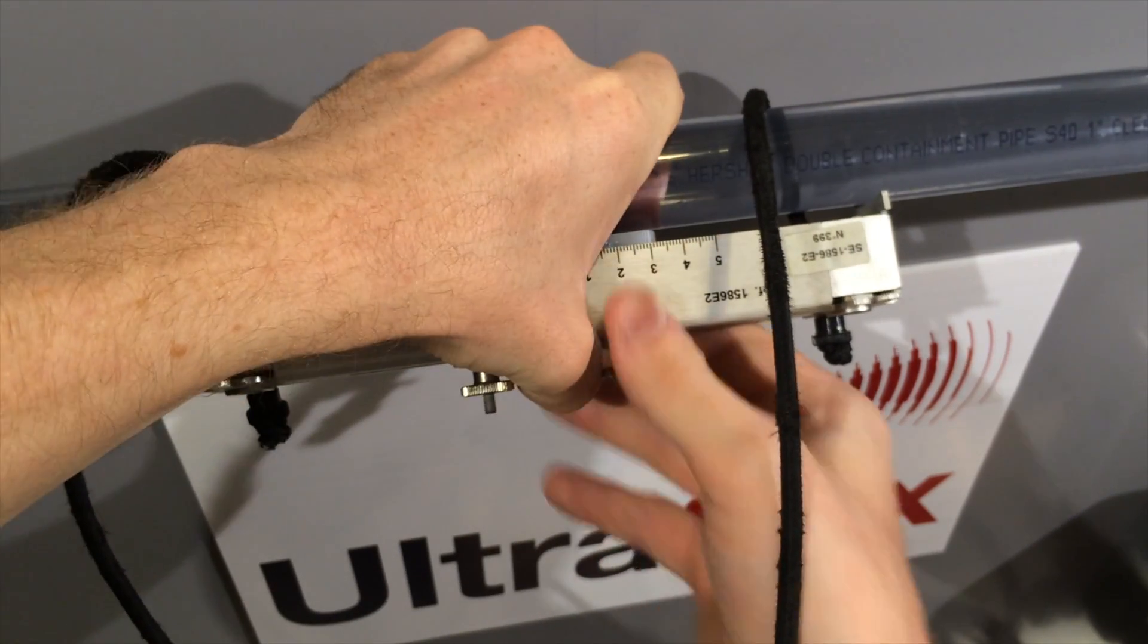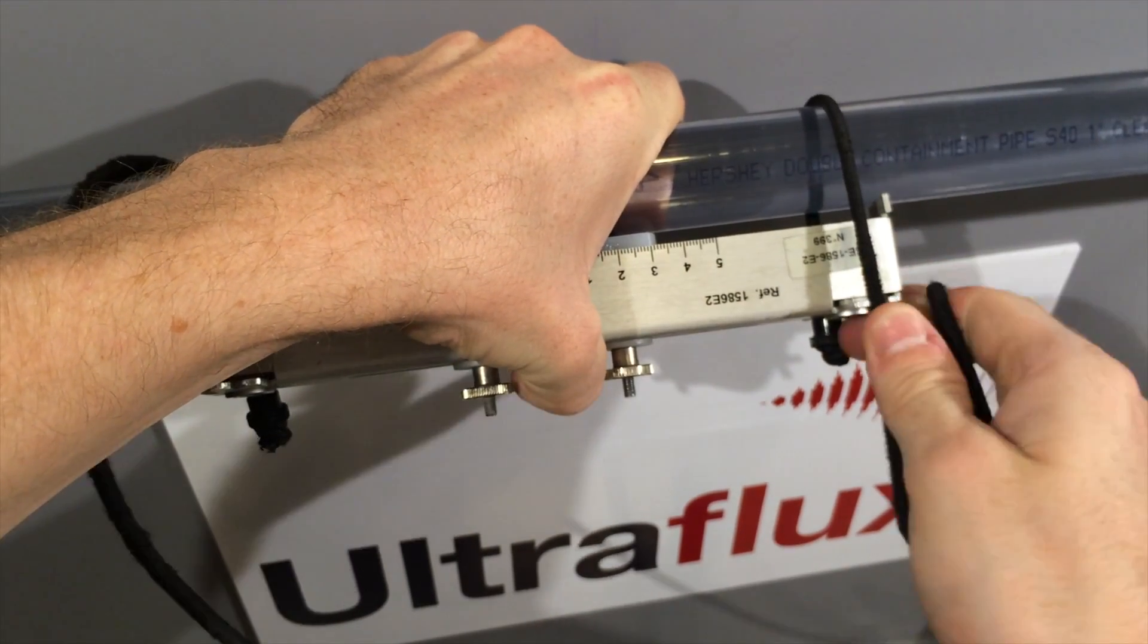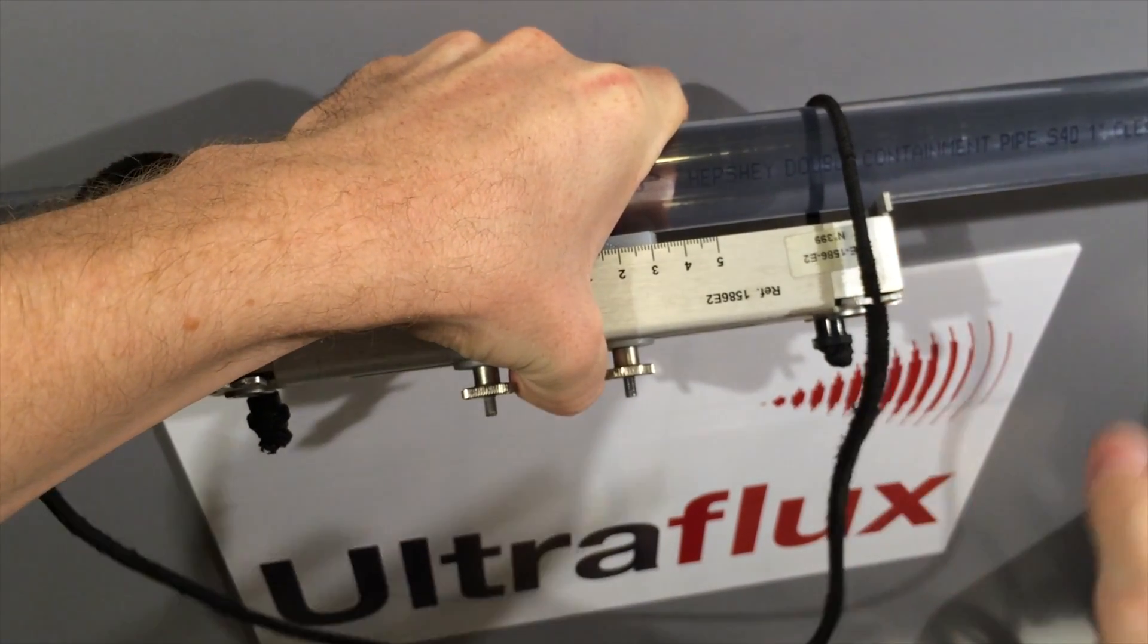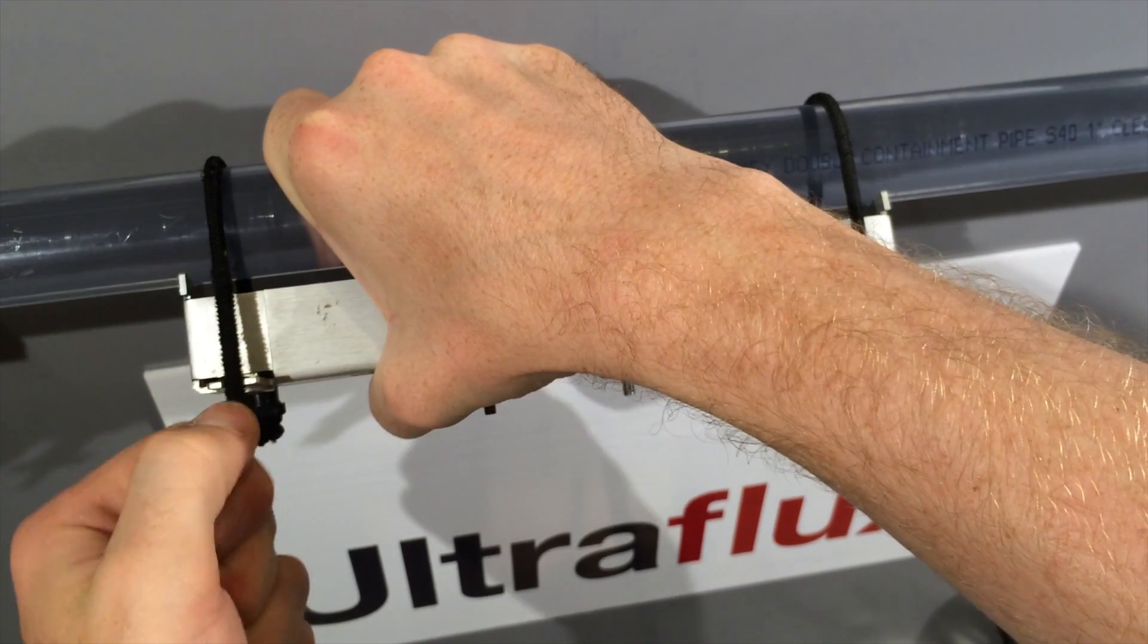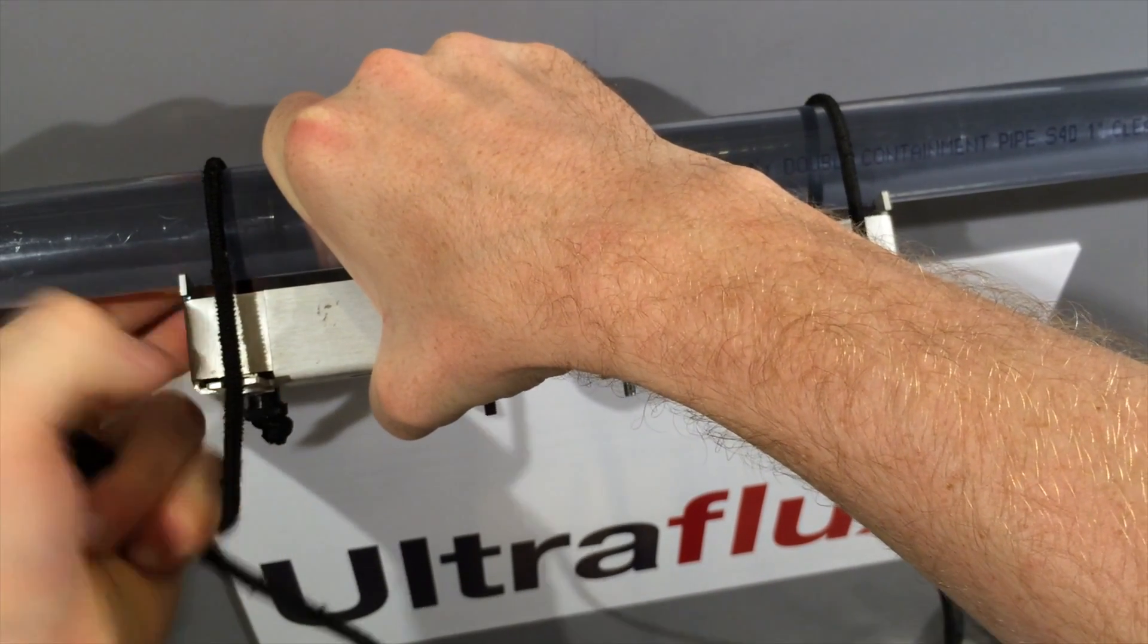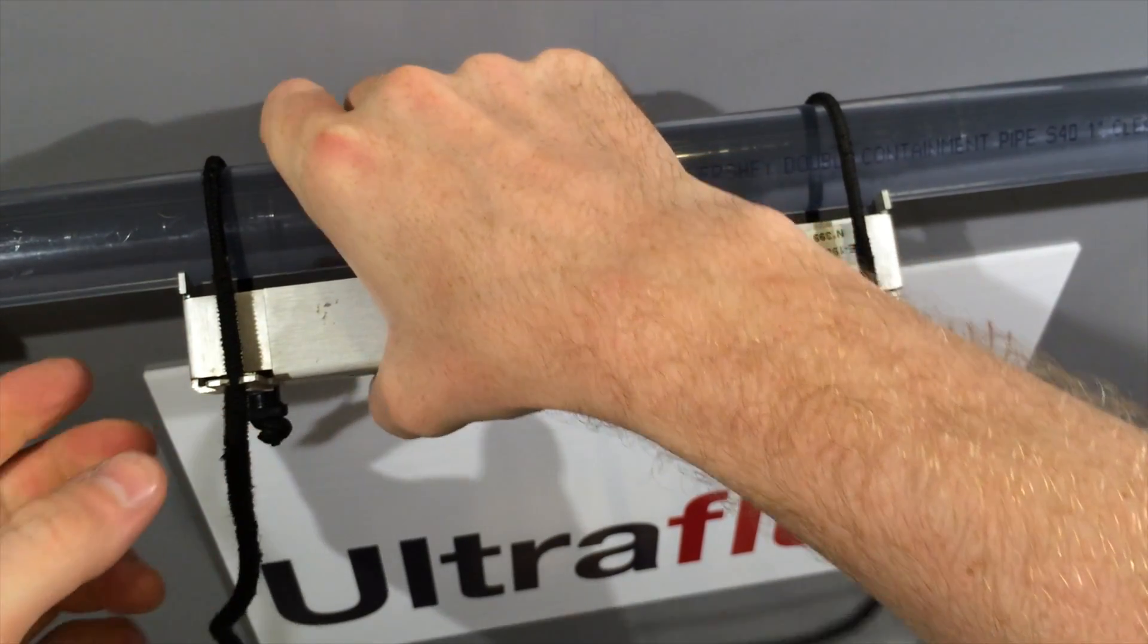Wrap the elastic strap around the pipe and block it with the two slots in the rail. Tighten it well.